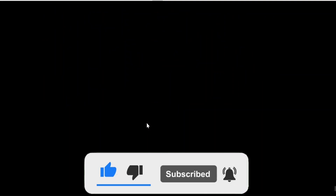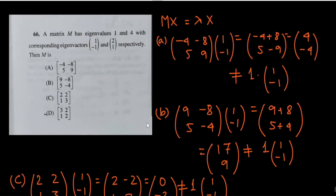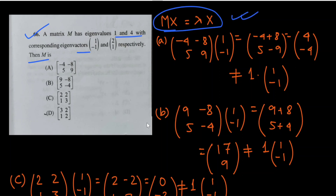The next question: matrix M has eigenvalues 1 and 4 with corresponding eigenvectors [1, −1] and [2, 1] respectively. We apply the condition Mx = λx and check which of the four options satisfies this for both eigenpairs.